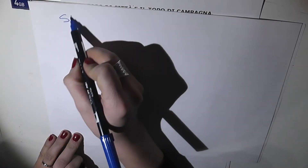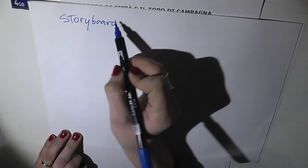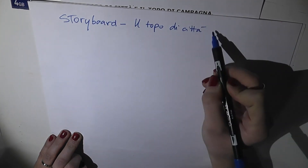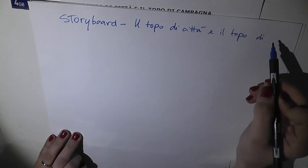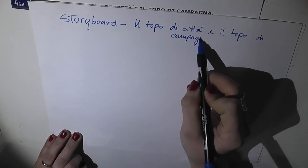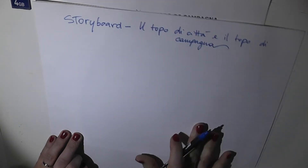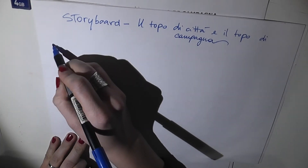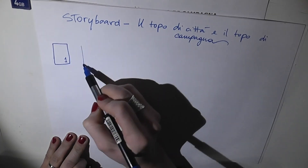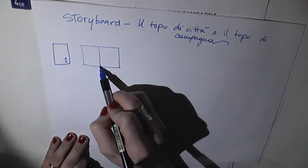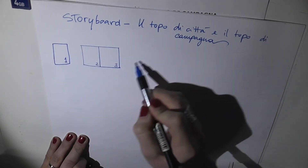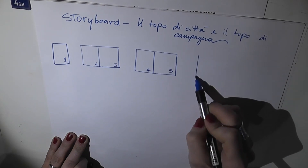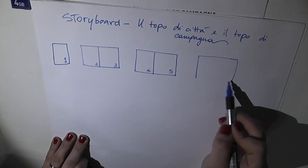Procedo con il vero e proprio storyboard. Come ho detto prima, lo storyboard ci permette di avere una visione d'insieme e una visione sintetica delle nostre pagine illustrate. Parto dalla pagina 1, che è da sola non accoppiata, e poi procedo con le pagine 2 e 3, 4, 5, 6, 7, 8, 9, 10, 11 e infine 12.